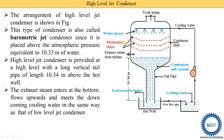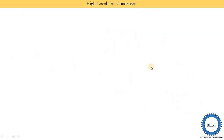At the bottom part of the condenser, exhaust steam from the turbine is supplied and moves upward. From the top, cooling water is sprayed and moves downward — this is the counter-flow. When the steam comes into contact with the cooling water, the steam starts to condense, and the condensate is collected in the bottom part of the condenser.